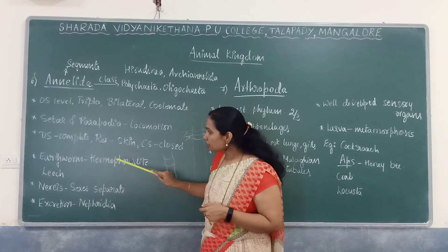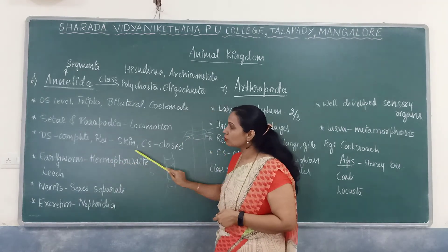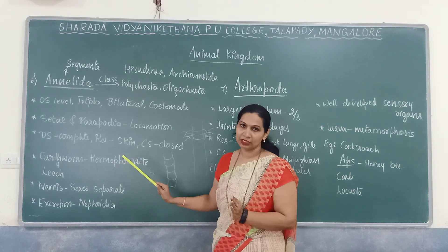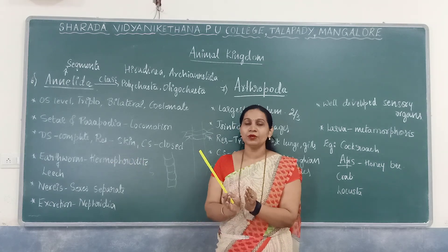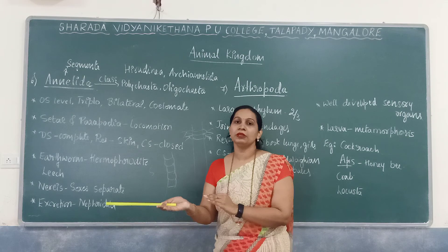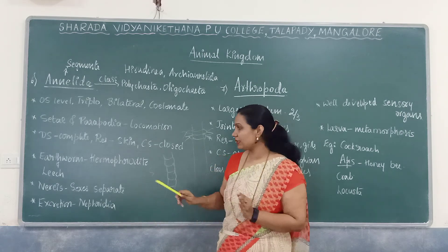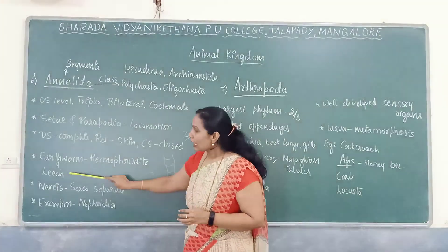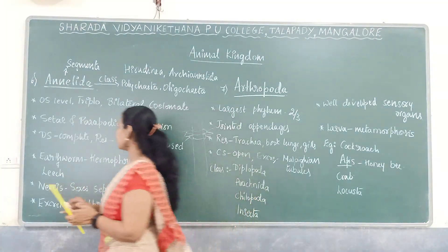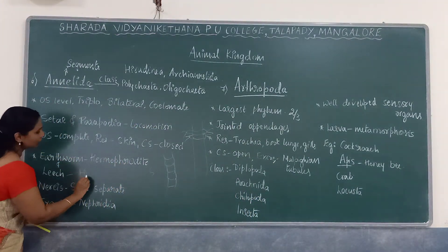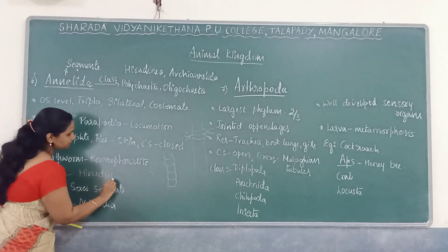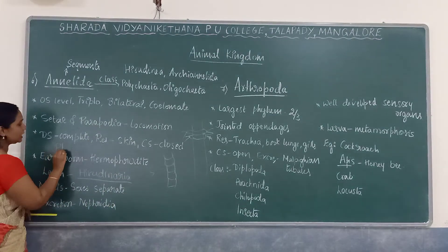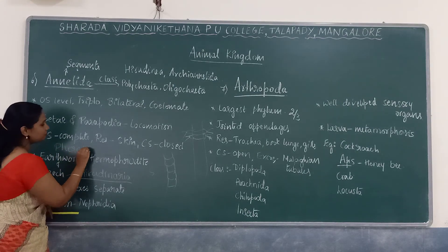Earthworm is a hermaphrodite — there is no separate male or female earthworm; a single earthworm contains both male and female sex organs. Leech is also a hermaphrodite. The scientific name of leech is Hirudinaria, and the scientific name of earthworm is Pheretima.